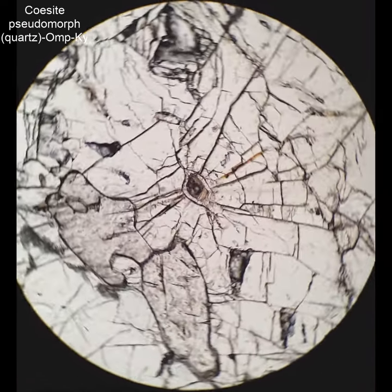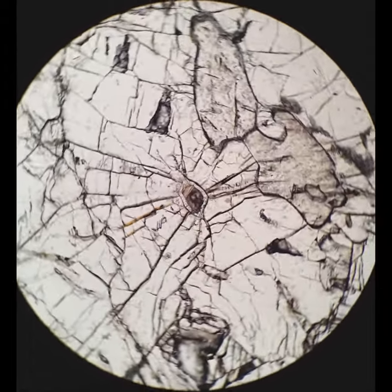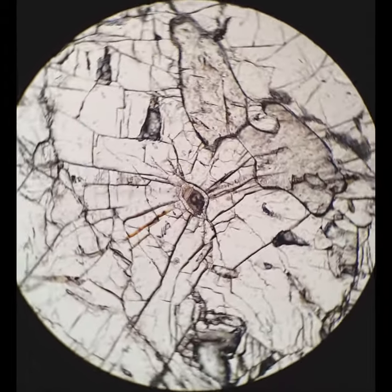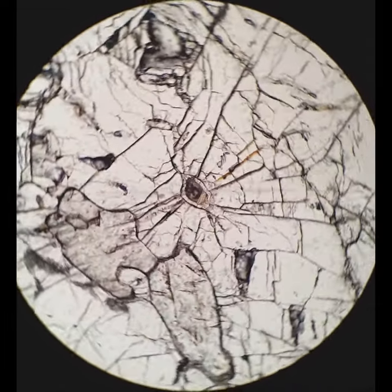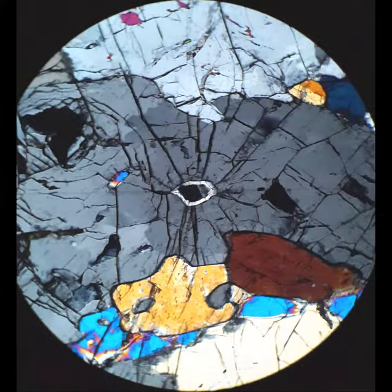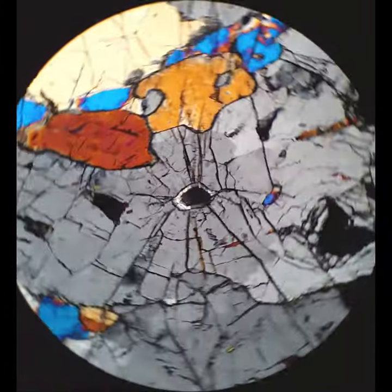And this is just an example of a quartz pseudomorph after coesite inside pyroxene, omphacite. And so you see the radiating fractures. That core, again, is plucked out and is epoxy. But you can still see that palisade quartz ring.